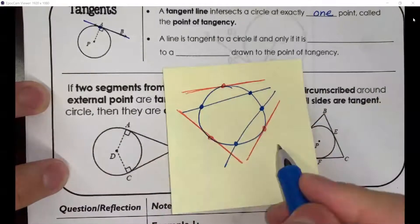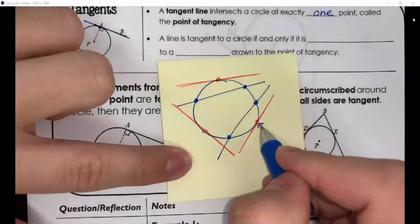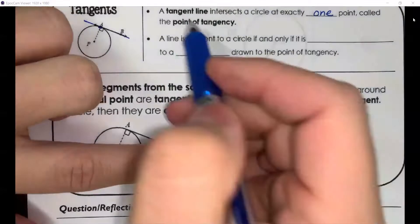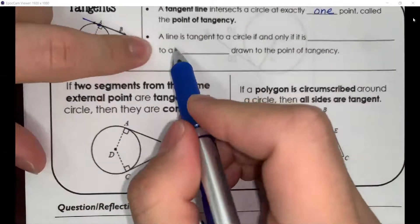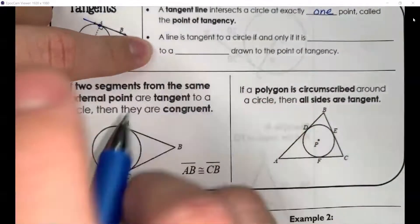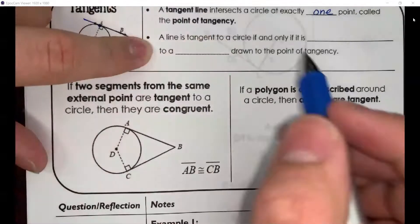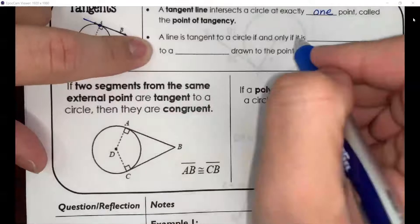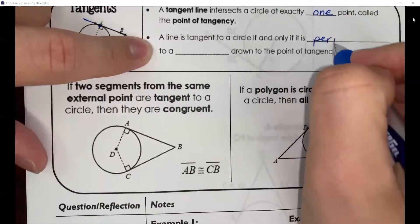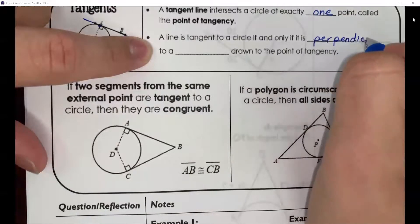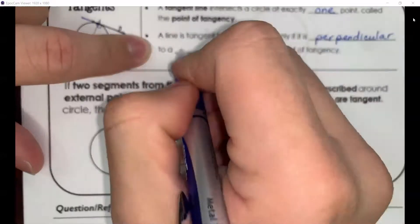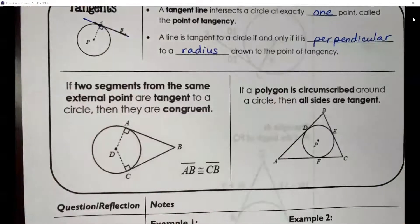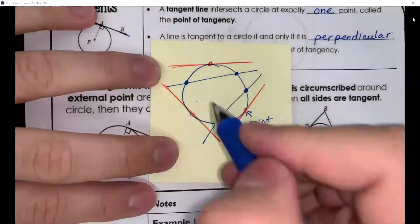That single point where the tangent line crosses, we call this the point of tangency. Now the main property you have to understand about tangent lines is that a line is tangent to a circle if and only if it is perpendicular to a radius drawn to the point of tangency. So if I look at my circle, the radius is from the center to any point on the circle.